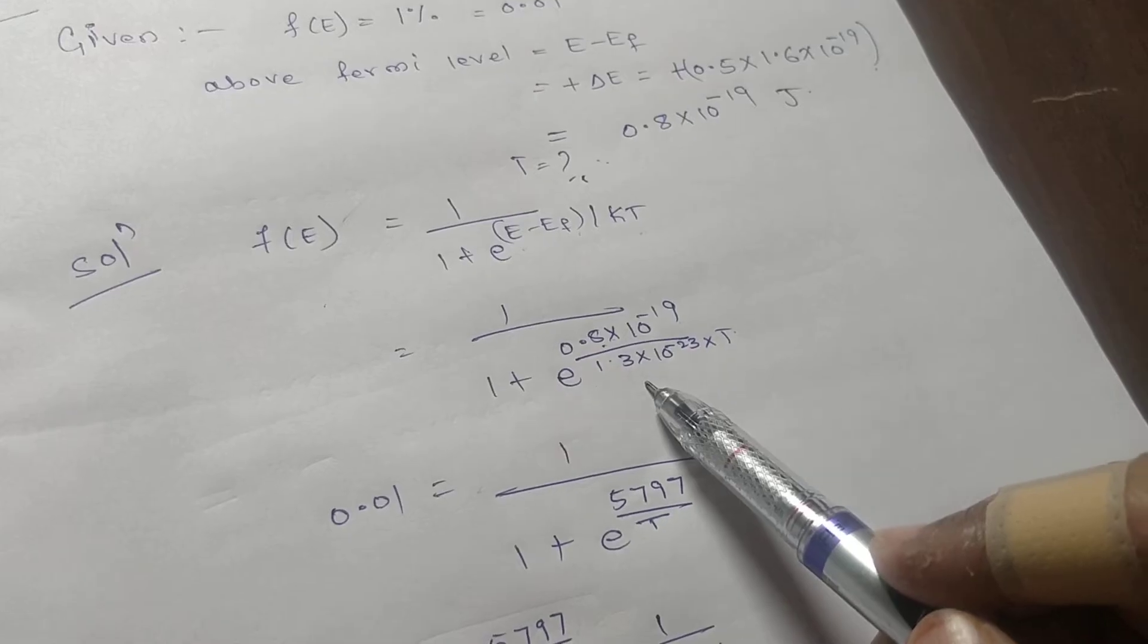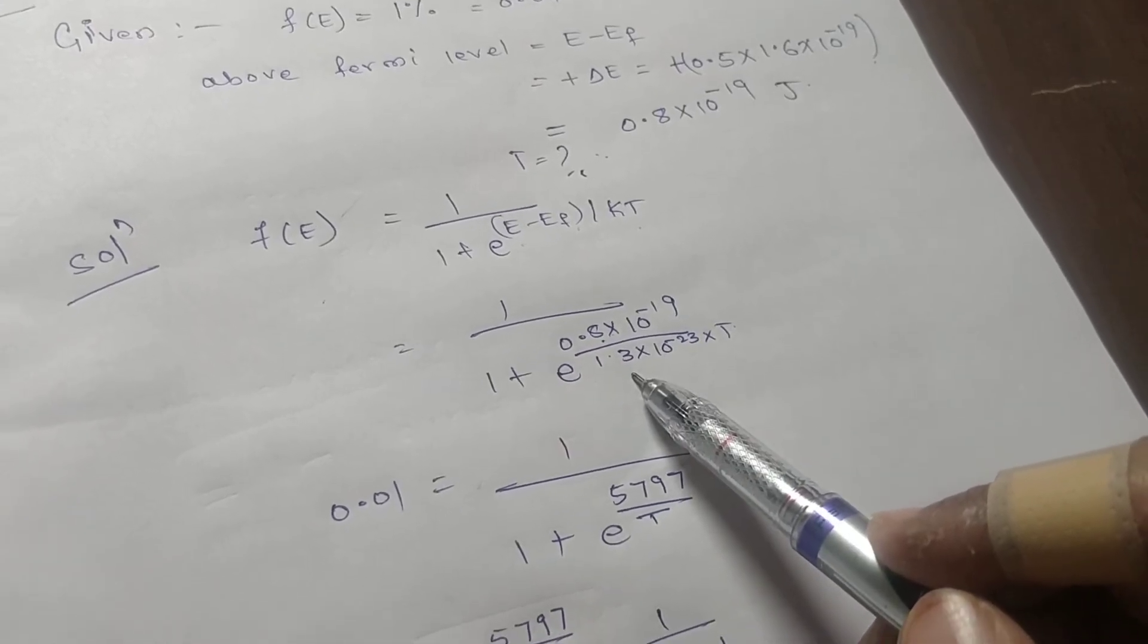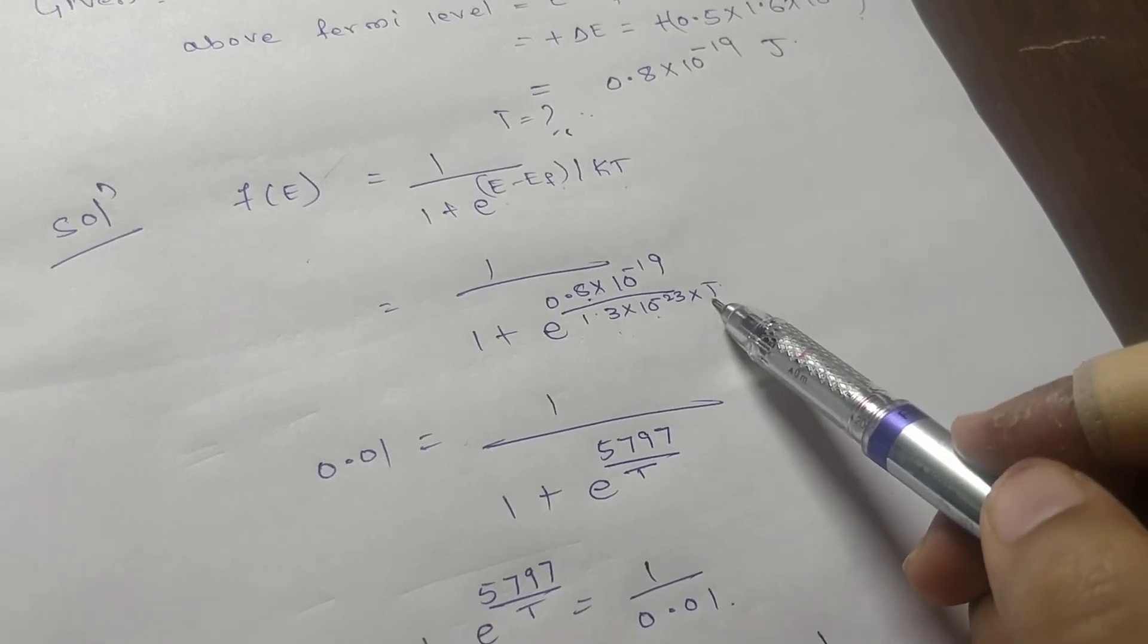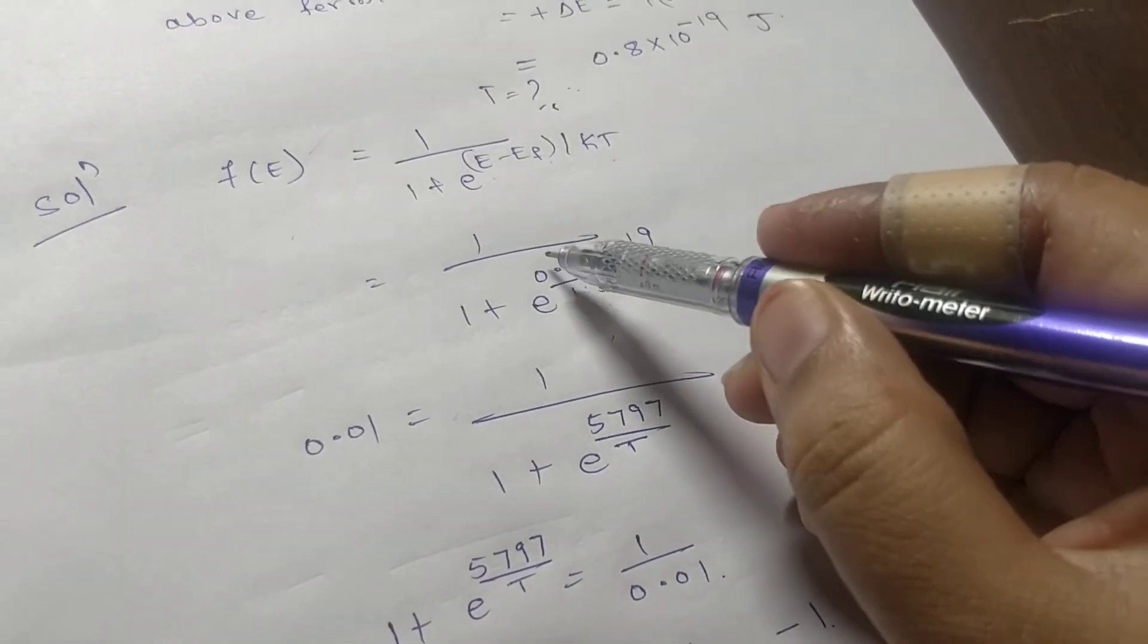And k is the Boltzmann constant. Substitute that and T value we have to calculate. First solve for this. When you solve this you will get a value 5797 over T.